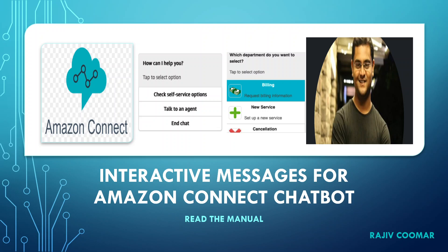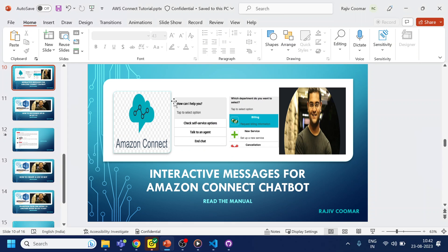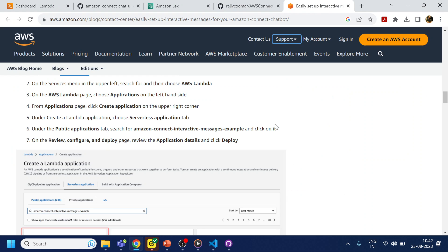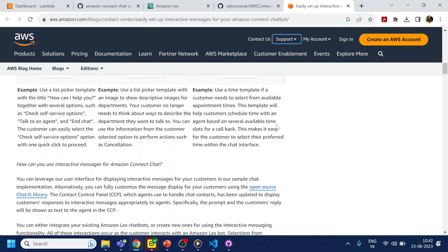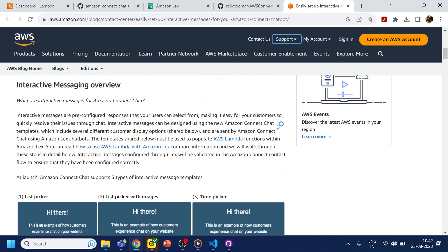In this video we are going to talk about the interactive messages for the Amazon Connect chatbot. When I say interactive message, it is nothing but the list, the carousels, the suggestion buttons, and all those things. First of all, there is an article given by AWS Amazon on how to deploy the interactive message.